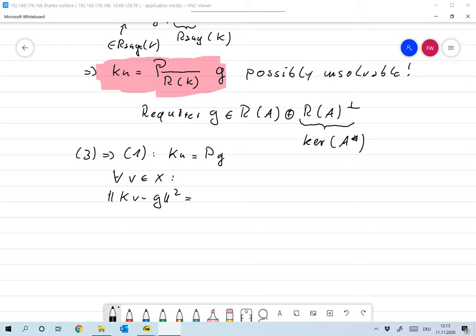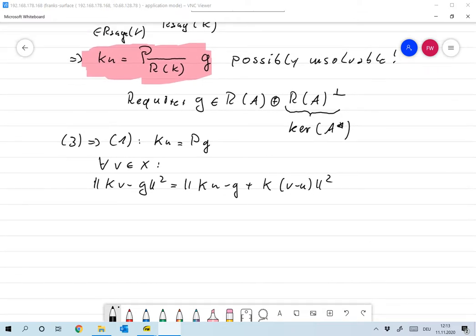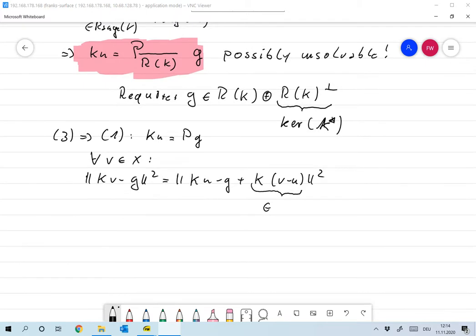Now this is the same as the norm of ku minus g plus k times v minus u. Now this is of course something which is in the range of k. I'm sorry, I was writing down a here, let me correct this to k. I always switch between operators a and k. I decided to take k for this lecture, but now this backfires.